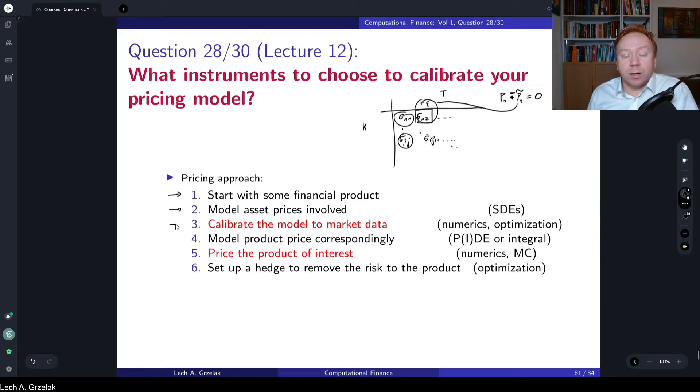As already discussed, this is also related to point number one where we would need to choose a set of instruments for calibration. So typically those would be the European type of options if we talk about equity market, equity asset class. We would use European type of options to calibrate our advanced, let's say stochastic volatility model, and then we would use that model to price an exotic derivative.